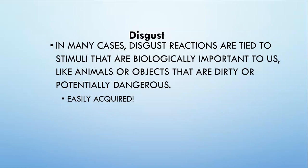The final thing we'll talk about is disgust. In many cases, disgust reactions are tied to stimuli that are biologically important to us — like animals or objects that are dirty or potentially dangerous — which means using these in conditioned learning allows us to easily acquire these behaviors. If you want to condition someone to be disgusted, it's the easiest behavior to teach using classical conditioning. And that's it for classical conditioning.